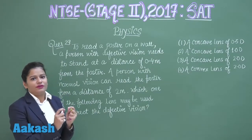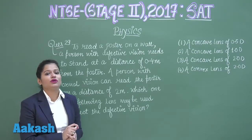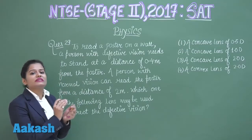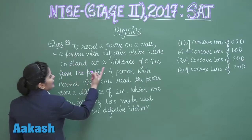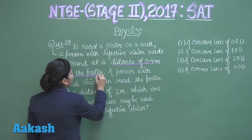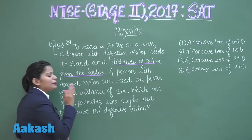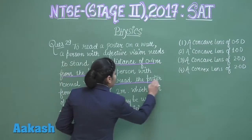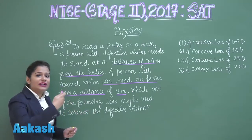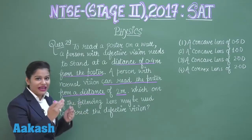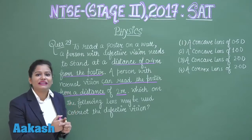In this question we need to find out which lens is used for the correction of the defect. Sabse pehle, it is very important to know what defect the person has. As you can clearly see, with the defective vision he needs to stand at a distance of 0.4 meter from the poster, meaning he has to go close to the poster to see it. So he cannot see distant objects clearly.